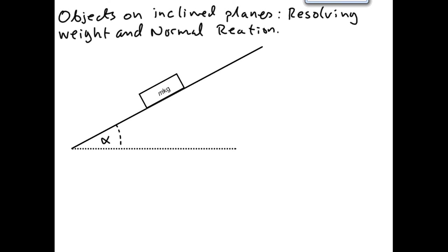We've got a mass of m kilograms resting on a plane inclined at alpha degrees to the horizontal. We want to work out what forces are acting on that block, parallel and perpendicular to the plane. The block could be moving either up or down the plane depending on what other forces are acting on it, or it may have been projected down it.